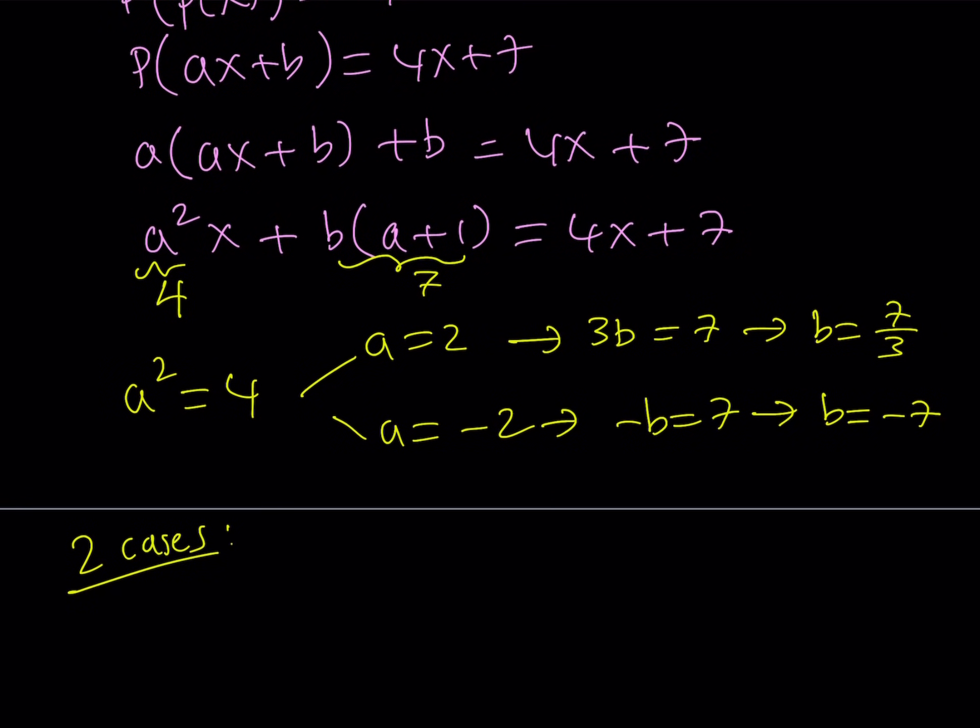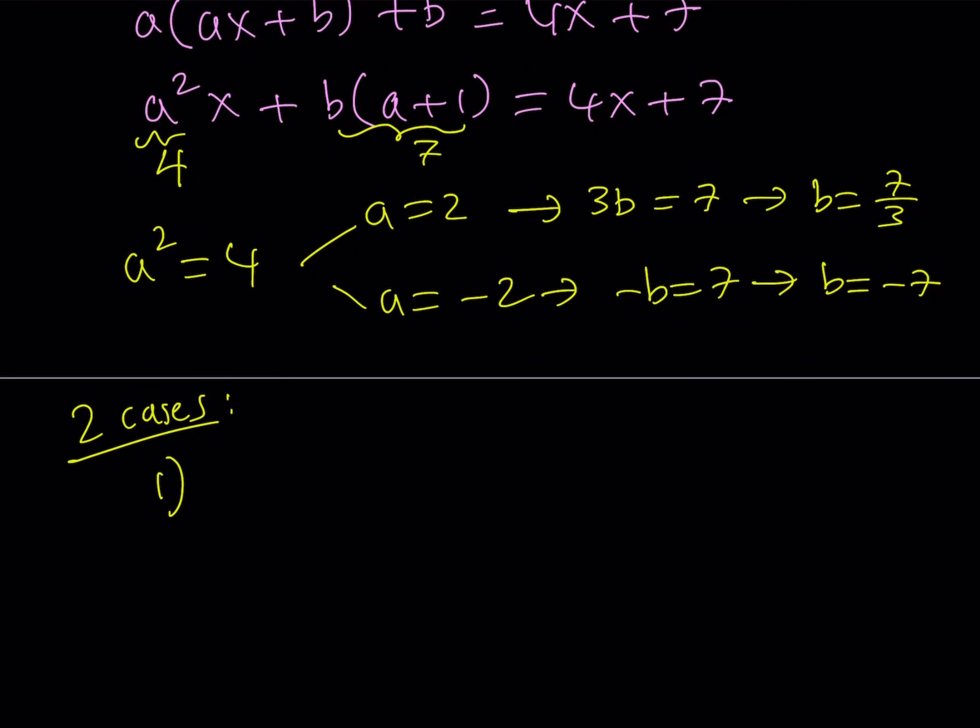Let's take a look at both cases. Case number one is where A is 2 and B is 7 thirds, and that gives us P of X equals 2X plus 7 thirds.